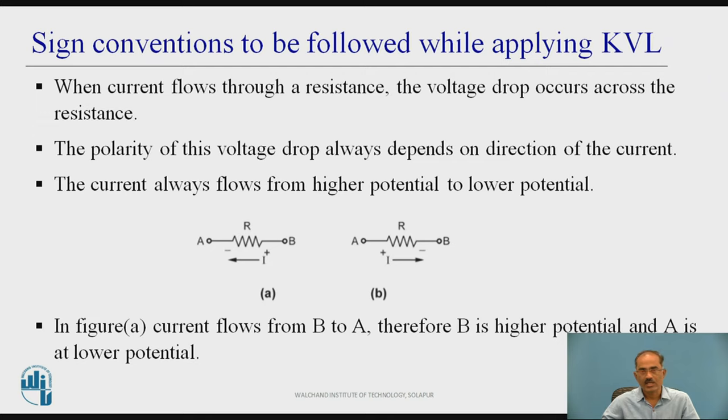Sign conventions to be followed while applying the Kirchhoff's voltage law. When current flows through a resistance, the voltage drop occurs across the resistance. The polarity of this voltage drop always depends on direction of the current. The current always flows from higher potential to lower potential.